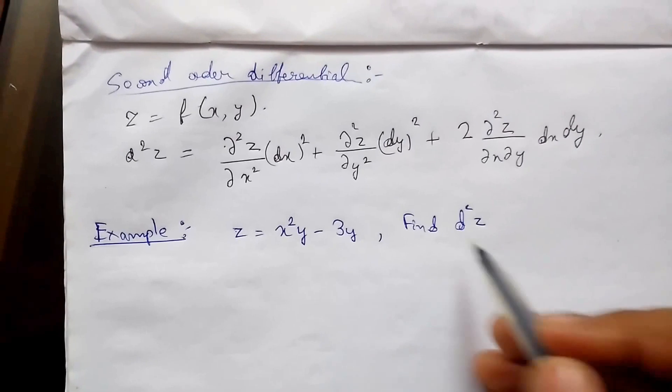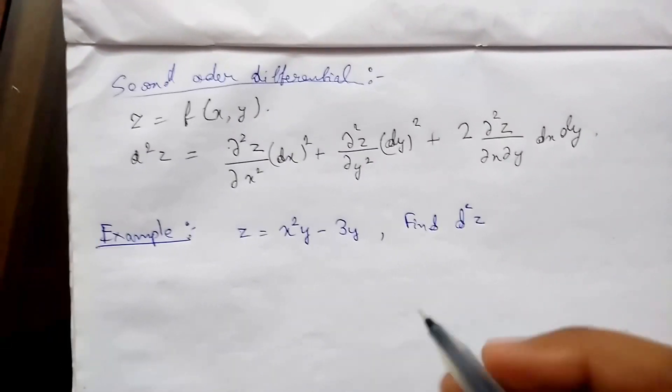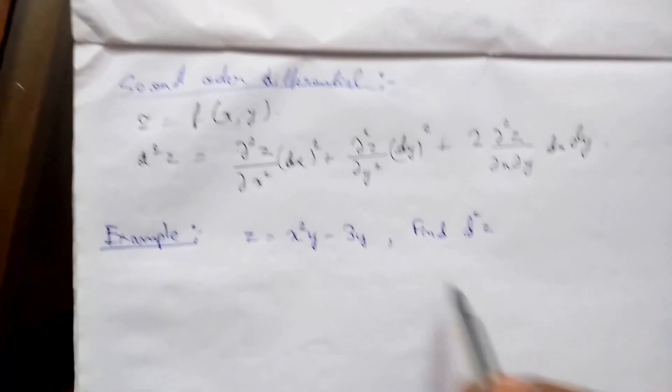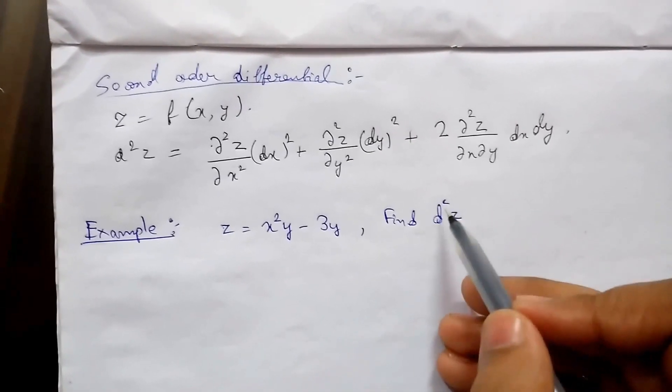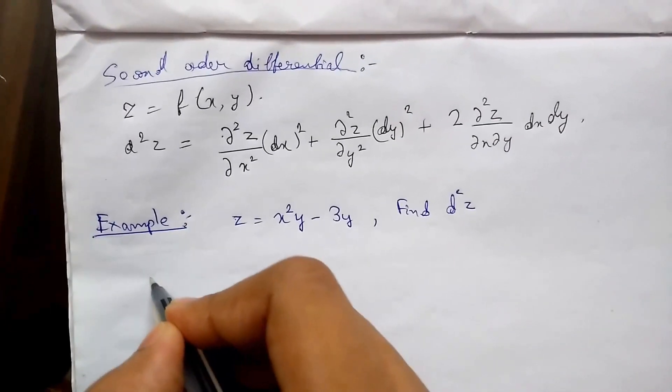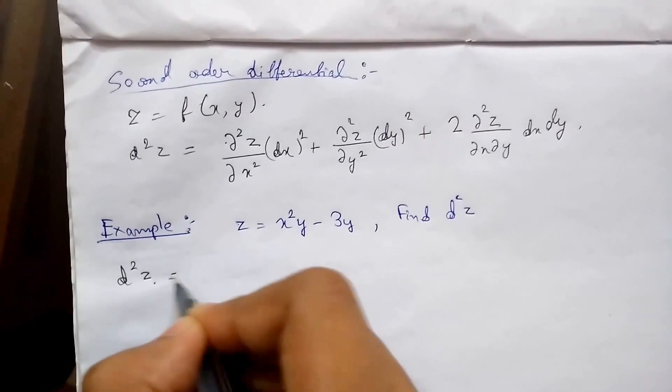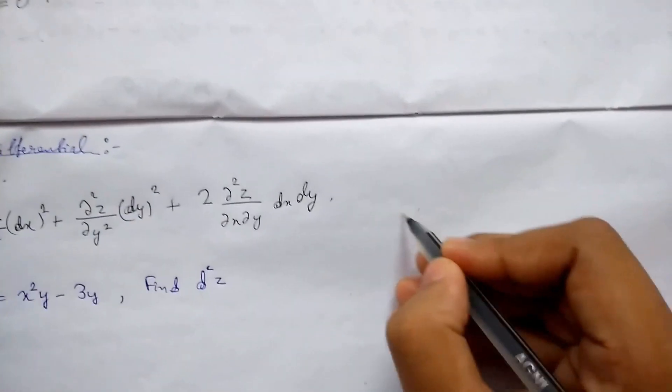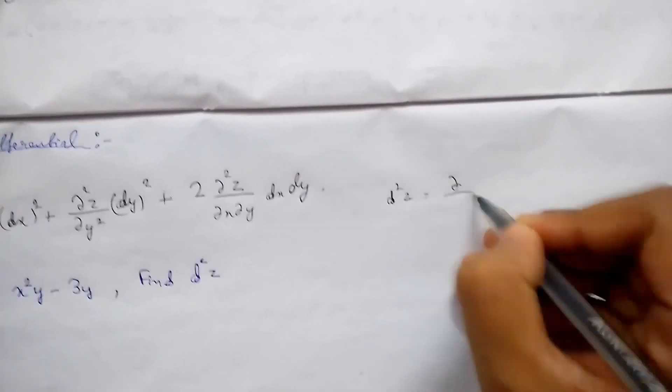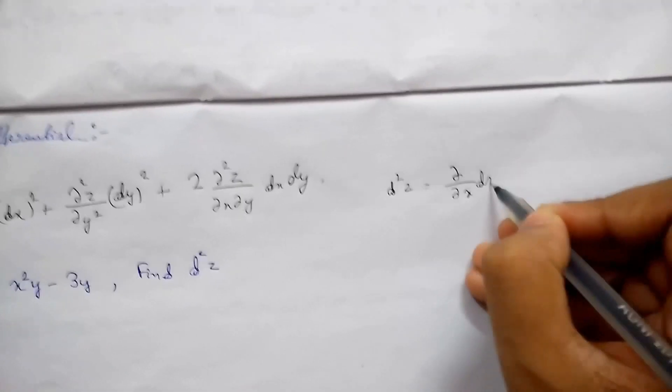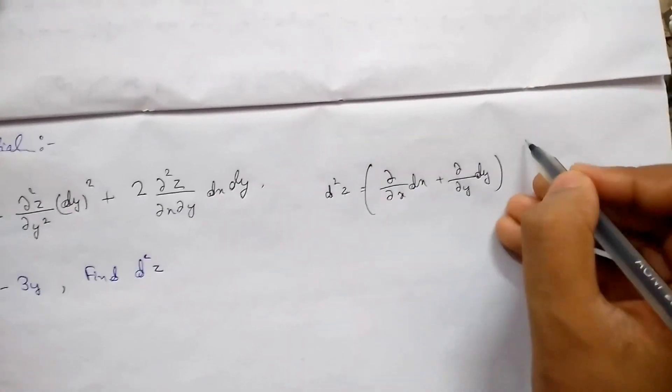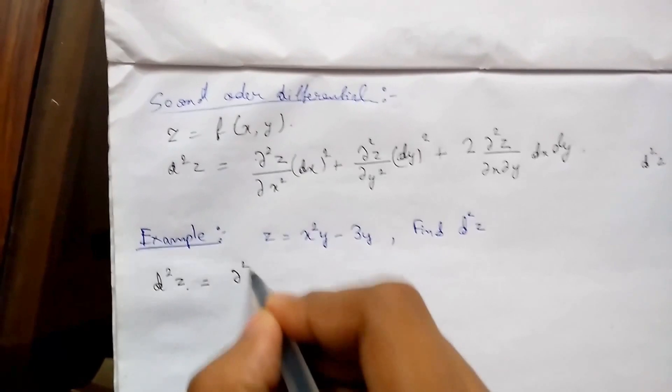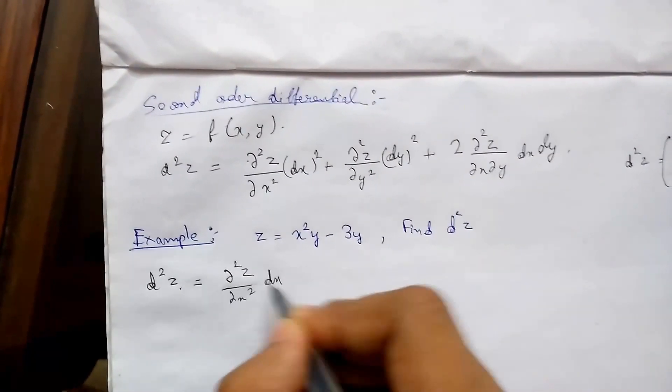So let us see an example to understand all functions and their meanings. We have z equals x square y minus 3y. We need to find d2z. So we know what d2z is. We can also write d2z as d2z equals del upon del x plus del upon del y whole square, which is del 2z upon del x 2 dx whole square plus 2 del 2z upon del x del y dx dy plus del 2z upon del y 2 dy whole square.